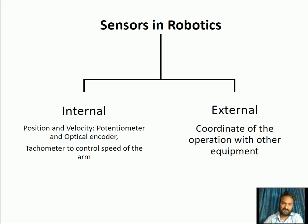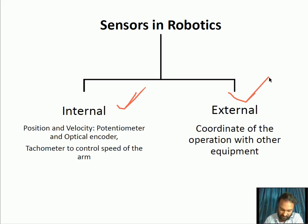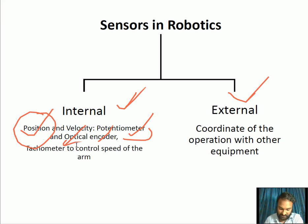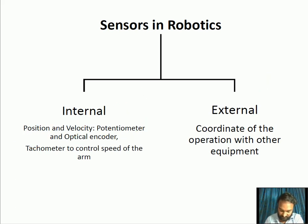In robotics, sensors are mainly classified into two types: internal and external. Internal sensors include position and velocity sensors. For position sensing, a potentiometer and optical encoder are used. For velocity sensing, a tachometer is used to control the speed of the robotic arm.